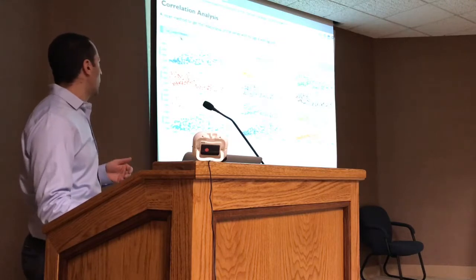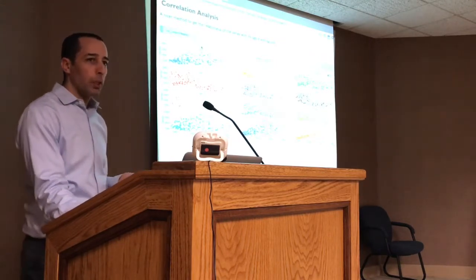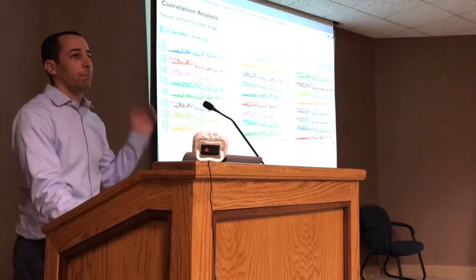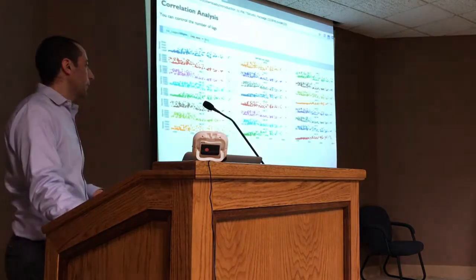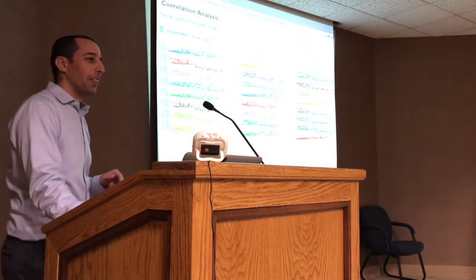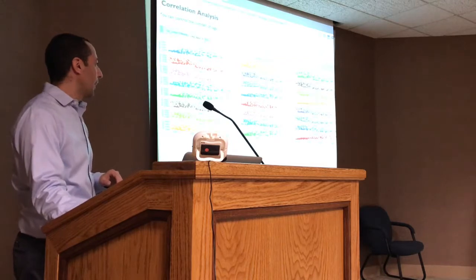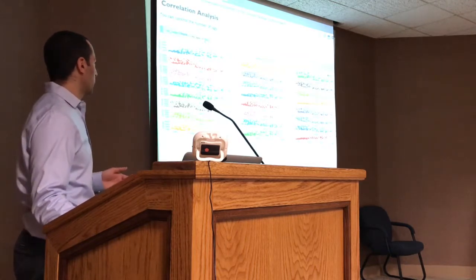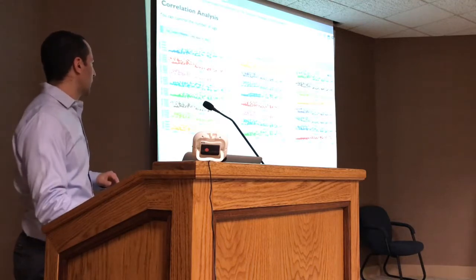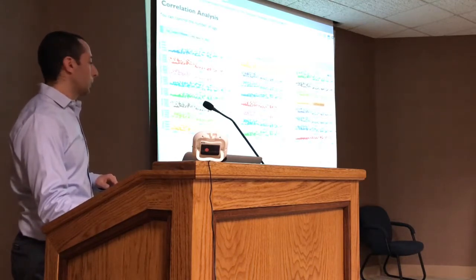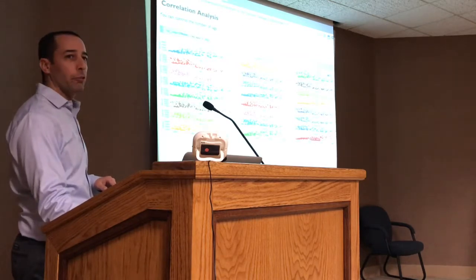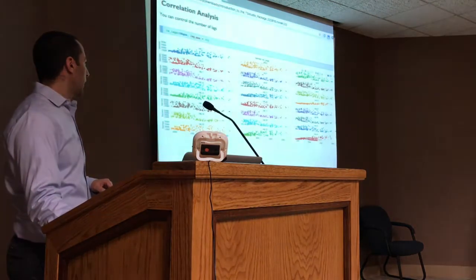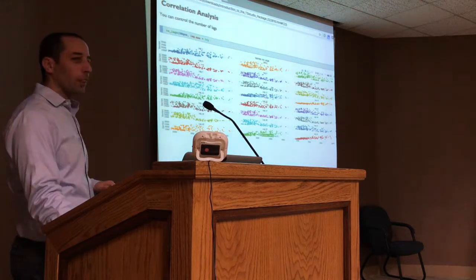One of the parameters you can set is the number of lags - the default is 12, but you can set it to 24 or any number you want. It might crash if you really overload it, but 24 should be fine. With 24 lags you can see that lag 12 is highly correlated and lag 24 is also still really correlated - and you can see which periods in between are more or less correlated with each other.